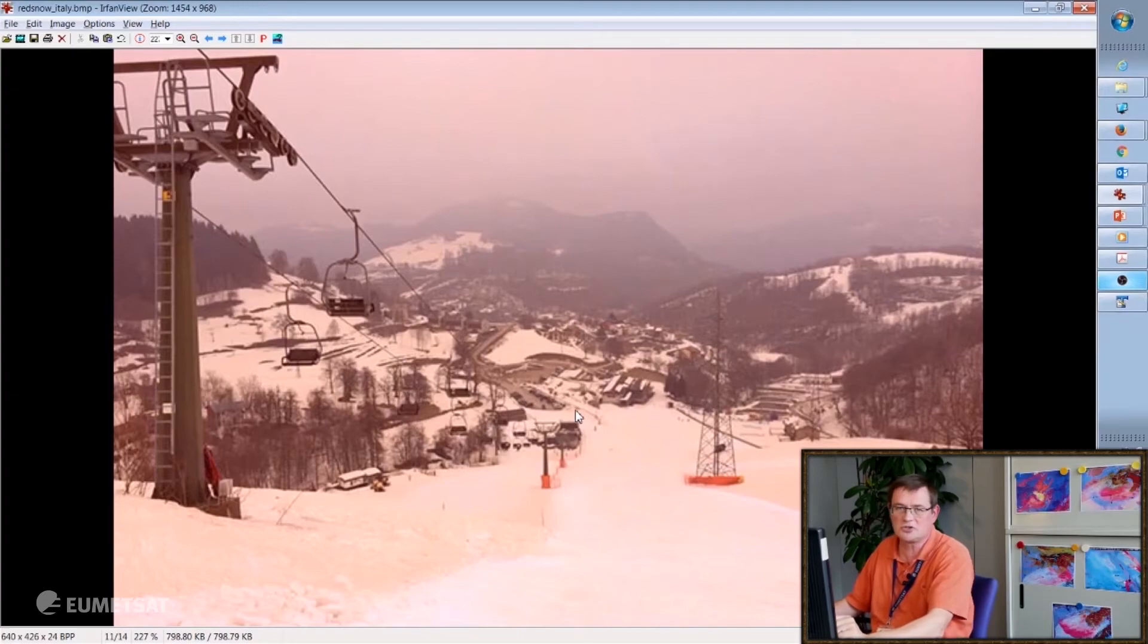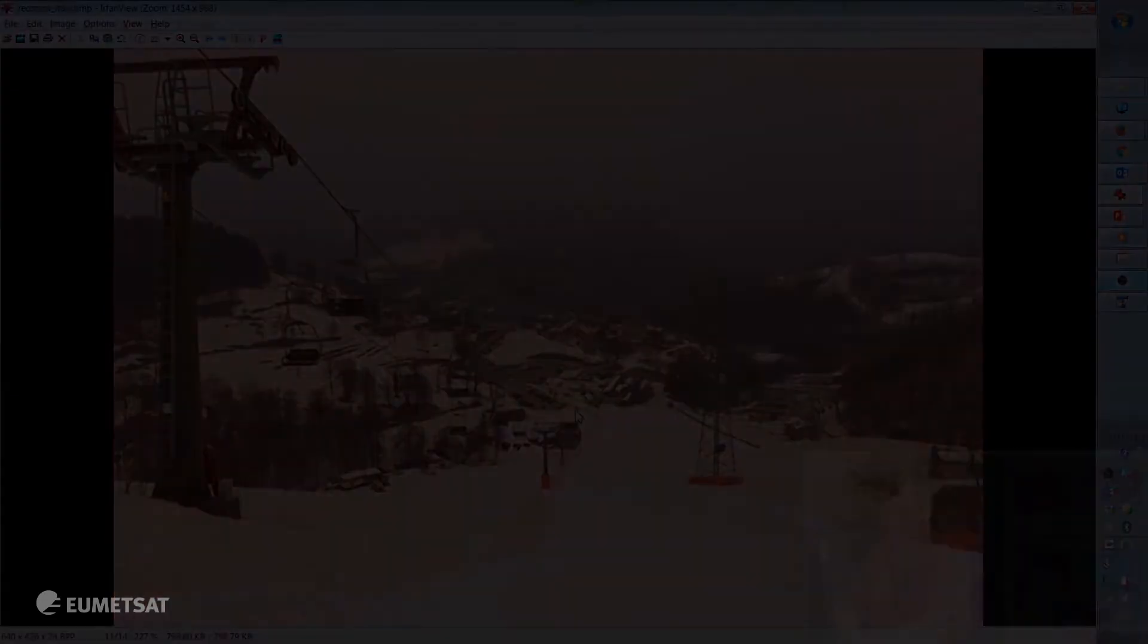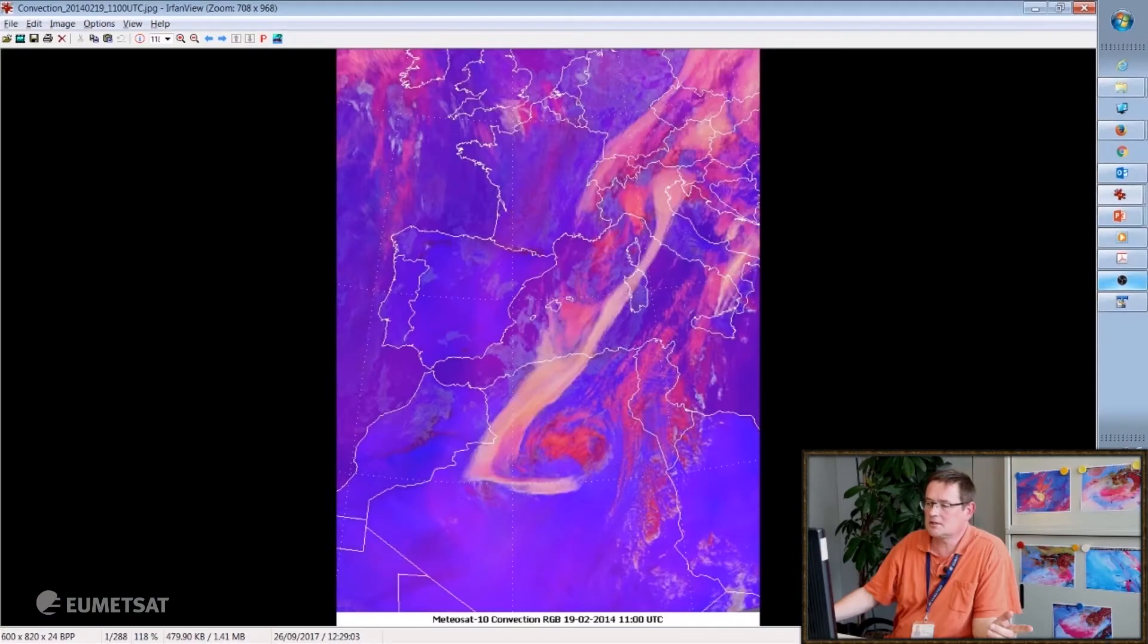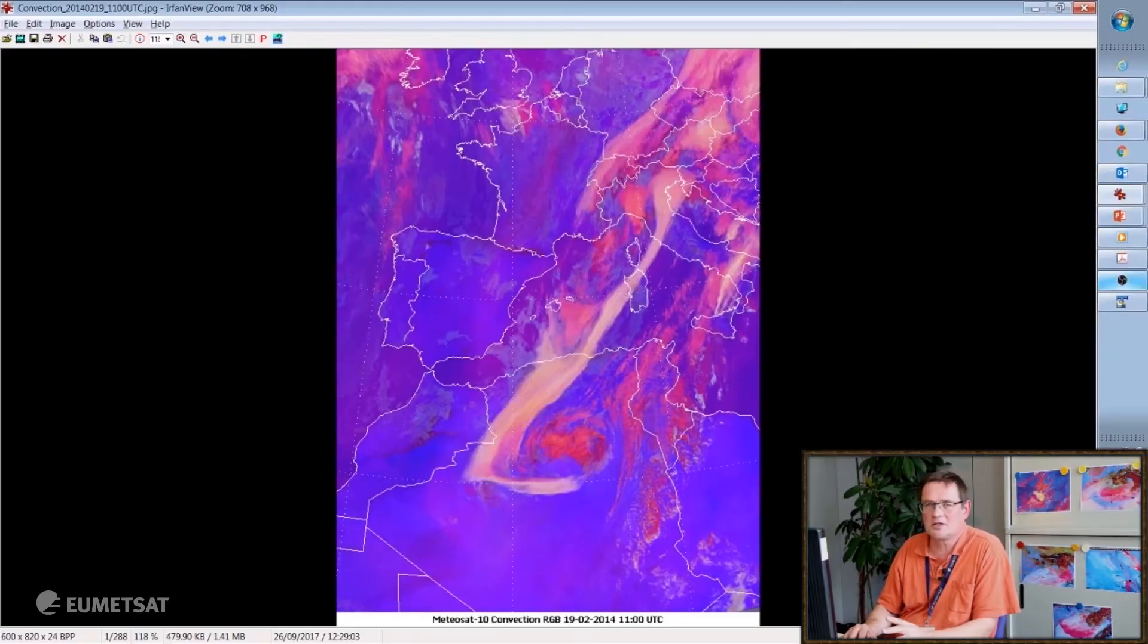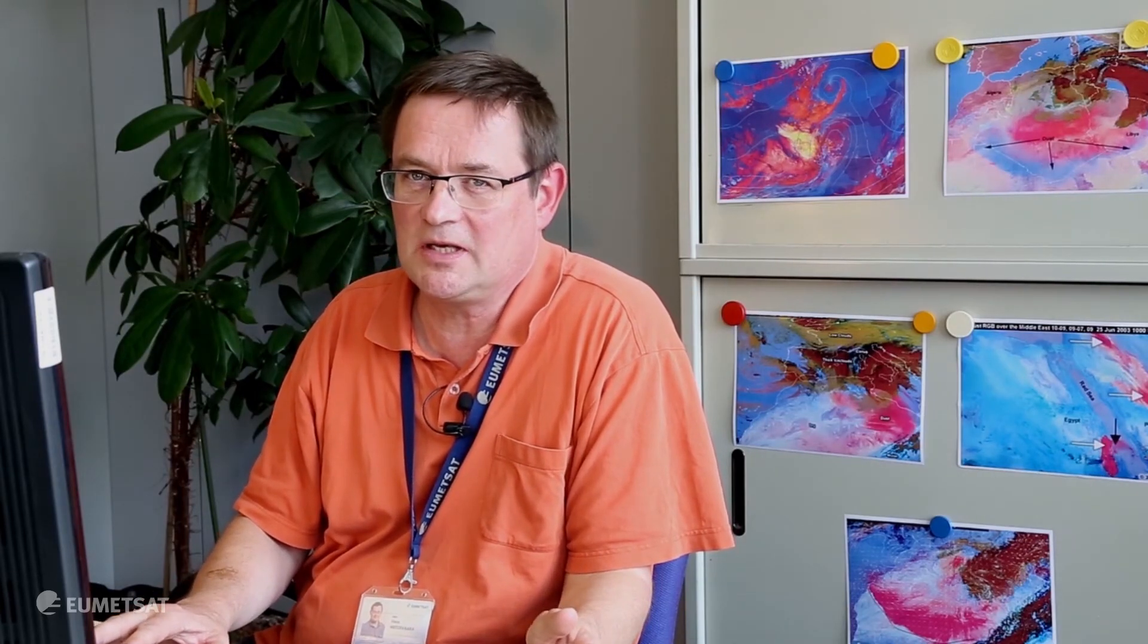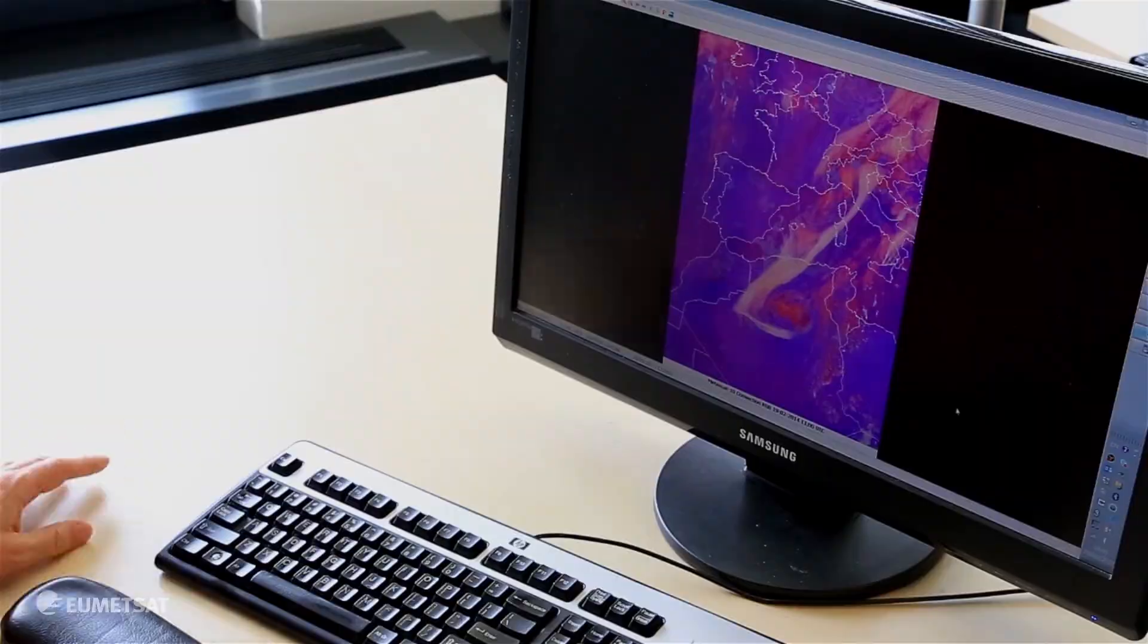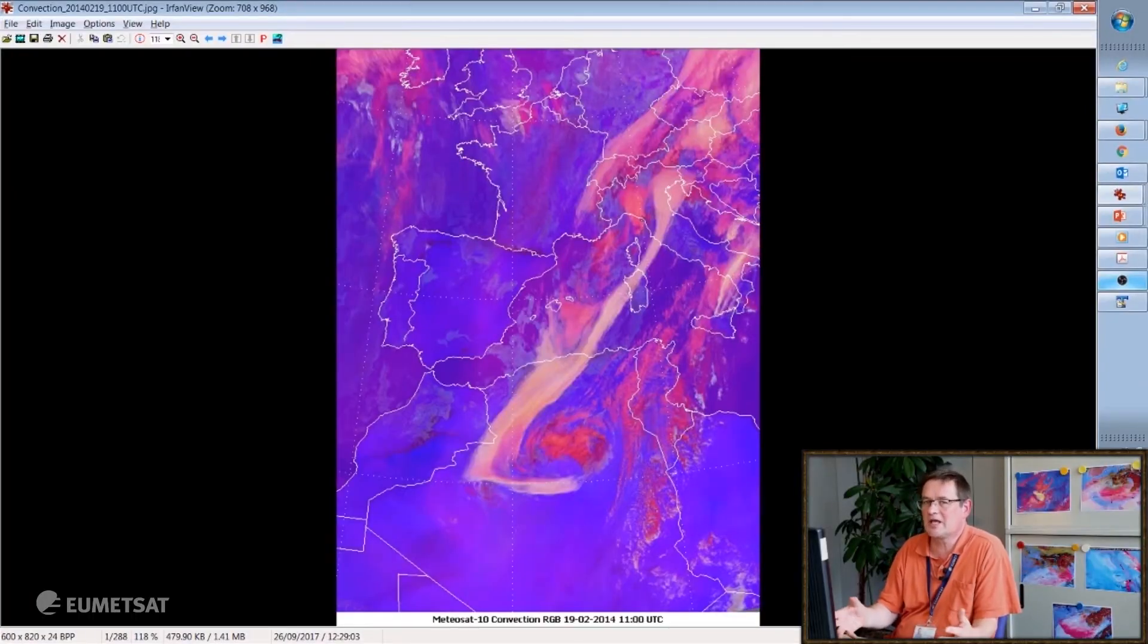You can see how the ground turns pinkish brownish because of the dust. Coming back to our second case it's good to know that dust interacts with the cloud particles. And that's one reason why in some other RGB products we may see surprising colors. For example, one example is convection RGB where normally we see yellow colors in connection with strong updrafts. In this case the dust particles create the same yellow color but it's not a sign of convection or updrafts but it's merely caused by the dust presence.